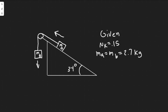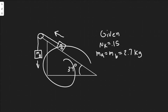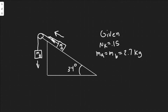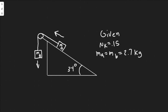In this problem we're told: the coefficient of kinetic friction between MA and the plane is μk = 0.15, and MA equals MB equals 2.7 kg. As MB moves down, determine the magnitude of the acceleration of MA and MB given θ = 34 degrees. Part B asks: what is the smallest value of μk that will keep the system from accelerating? We have an incline with two blocks, MB and MA, connected by a pulley. MB moves down and MA moves up the incline.